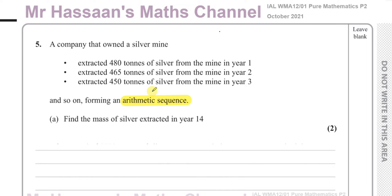An important thing with these applications of sequences questions is that the amount is in tons — 480 tons. That's very important to realize because many students don't write the unit down and they just put 480, losing marks. So you must make sure you take note of that.